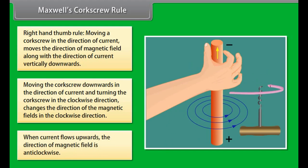So, when current flows upwards, the direction of magnetic field changes and is anti-clockwise.